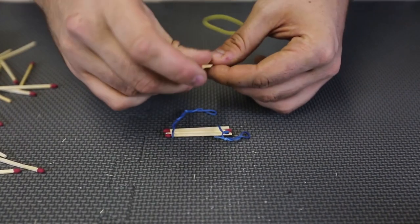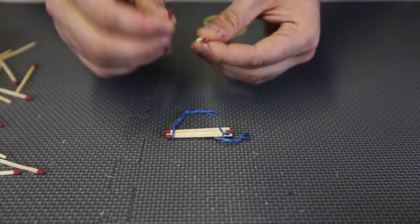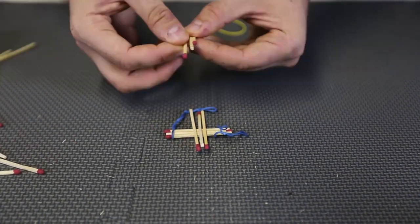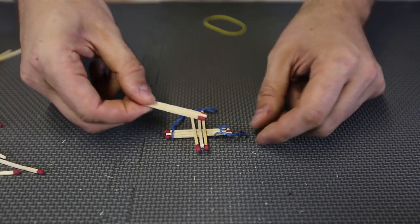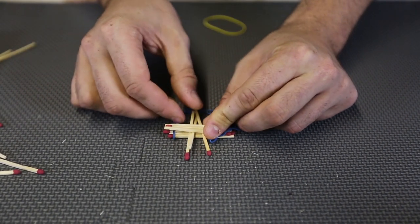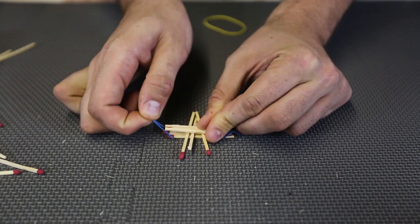Then we're going to get three more matches in this pattern and lay it like this. Once again three more matches, one head on this side so this time it's going two heads on this side. And we're going to put it through the rubber band.